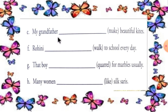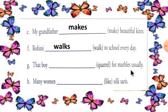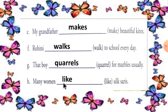My grandfather makes beautiful kites. Rohini walks to school every day. That boy quarrels for marbles usually. Many women like silk saris.